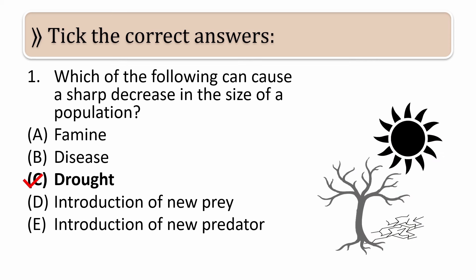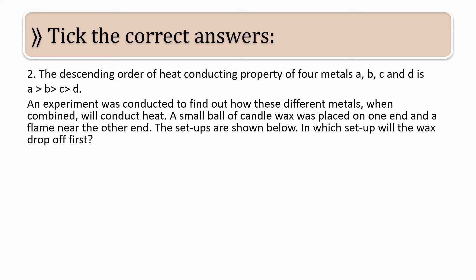Time's up, students. The answer is C, drought. What happens in drought? There is no rainfall, it is a period of dryness. So if there is no rainfall, no water, of course, and no food, we cannot survive without both. If water and food are not there, we cannot survive. And if such drought comes, then the population of that place decreases sharply.